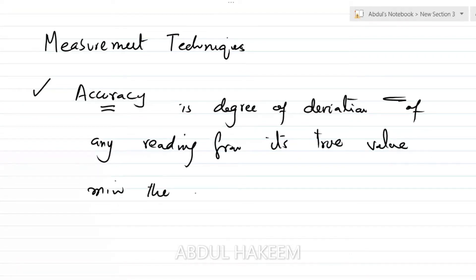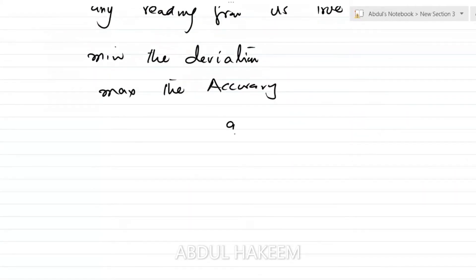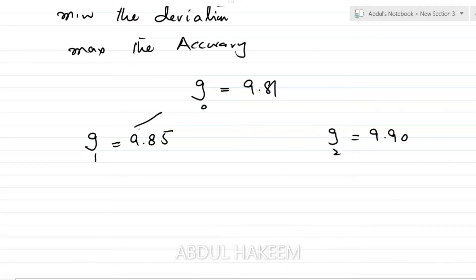Minimum the deviation, maximum the accuracy. For example, if the true value of g is 9.81, and the first reading is 9.85, and the second reading is 9.90. G1 is very close to the true value, and G2 is far from the true value.